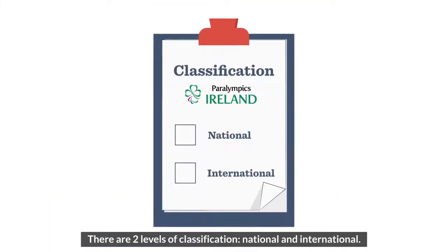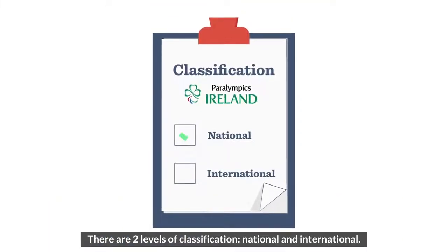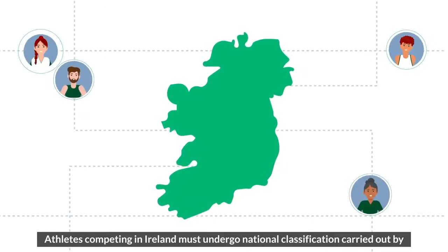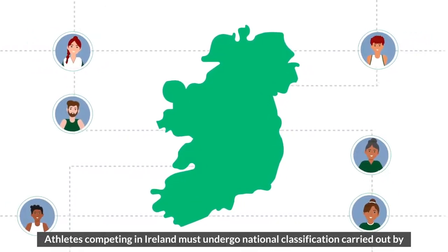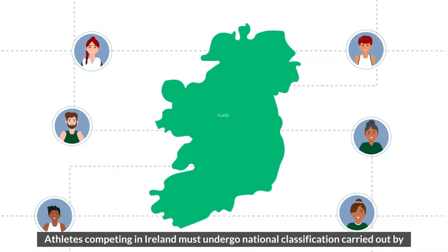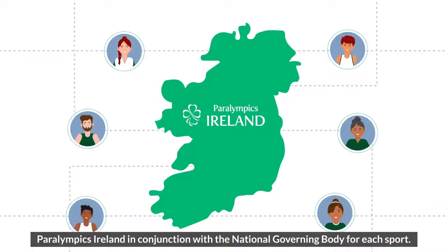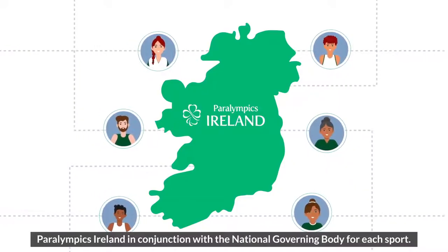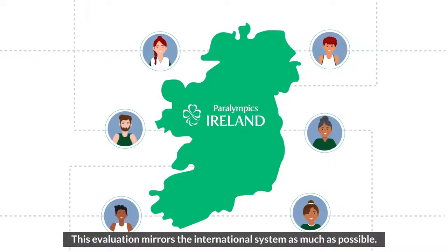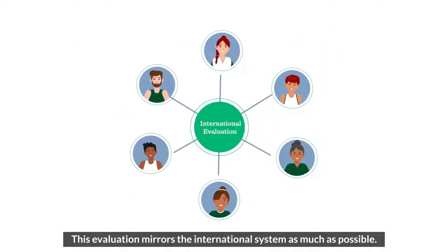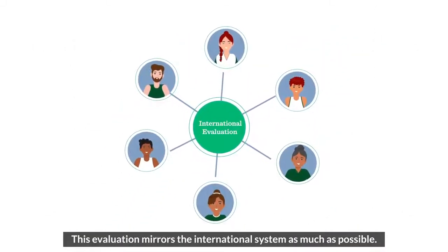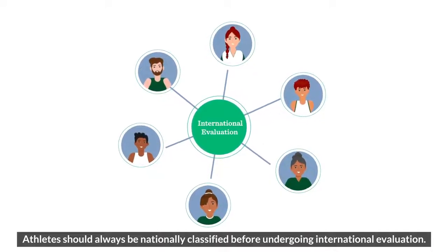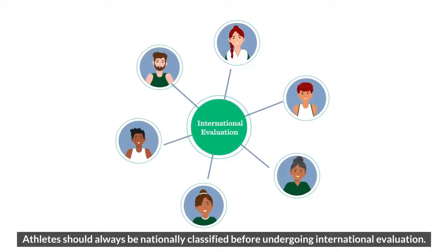There are two levels of classification: national and international. Athletes competing in Ireland must undergo national classification carried out by Paralympics Ireland in conjunction with the national governing body for each sport. This evaluation mirrors the international system as much as possible, and athletes should always be nationally classified before undergoing international evaluation.